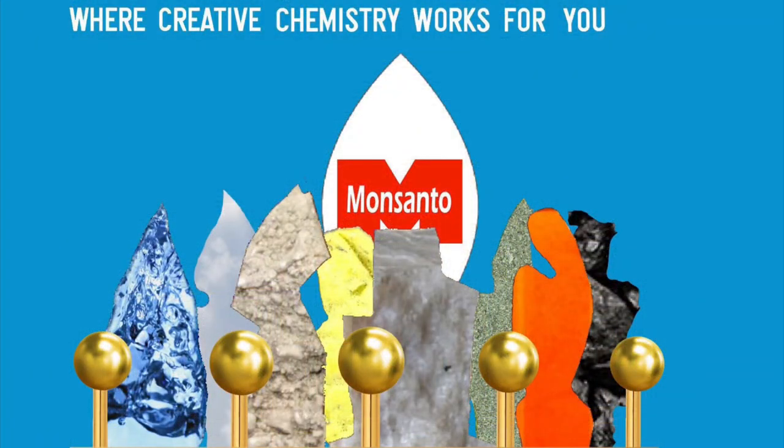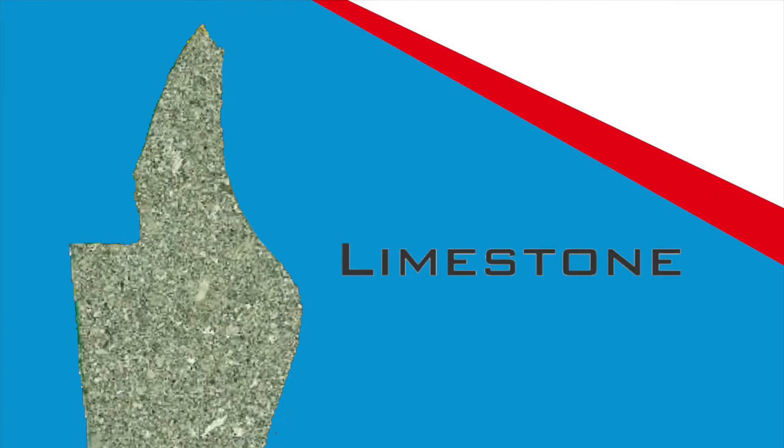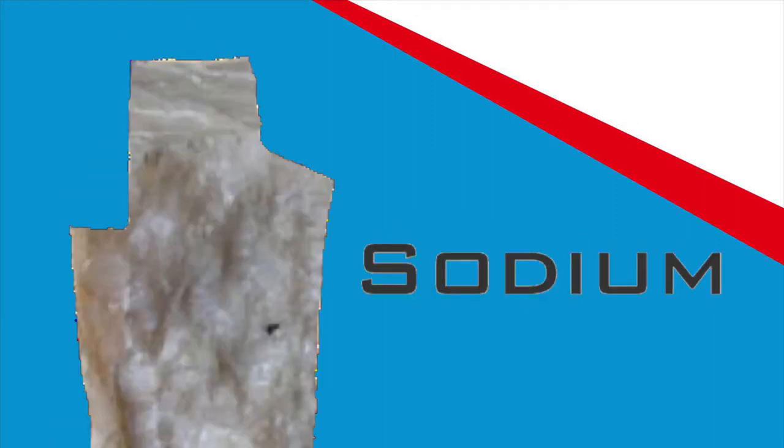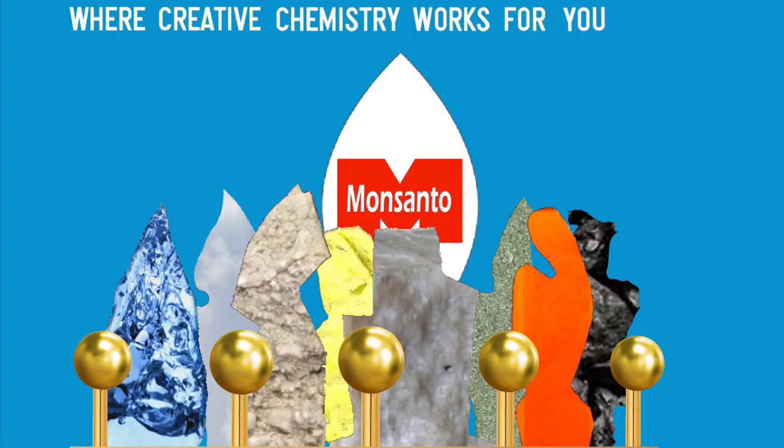Here you see the chemotron, eight huge test tubes topped with colorful statues: limestone, sulfur, air, coal, phosphate, water, oil, and sodium. Each stands for one of the eight natural materials from which all chemicals are made.